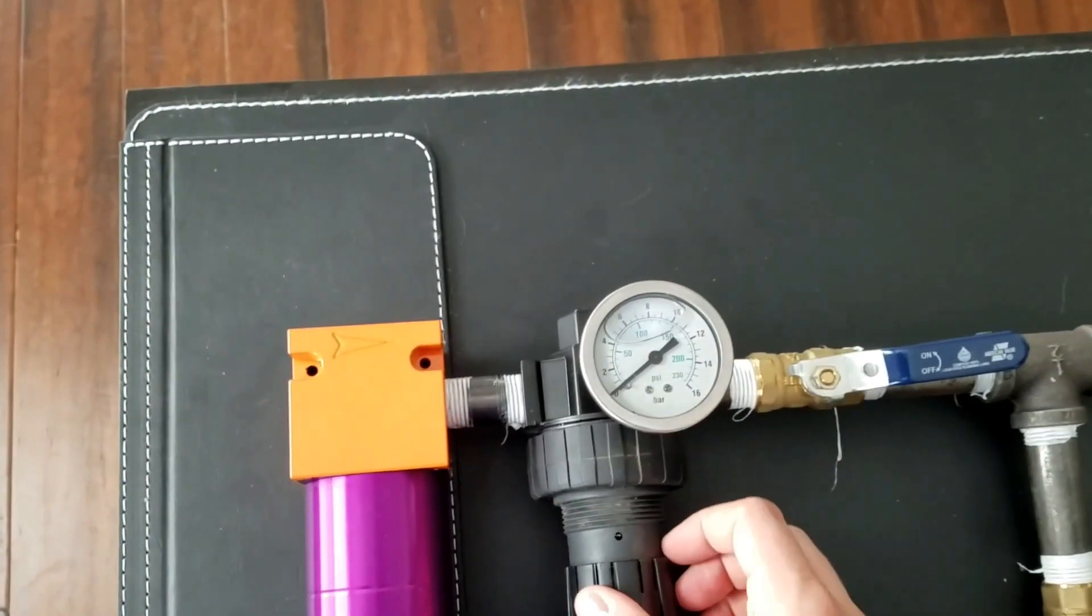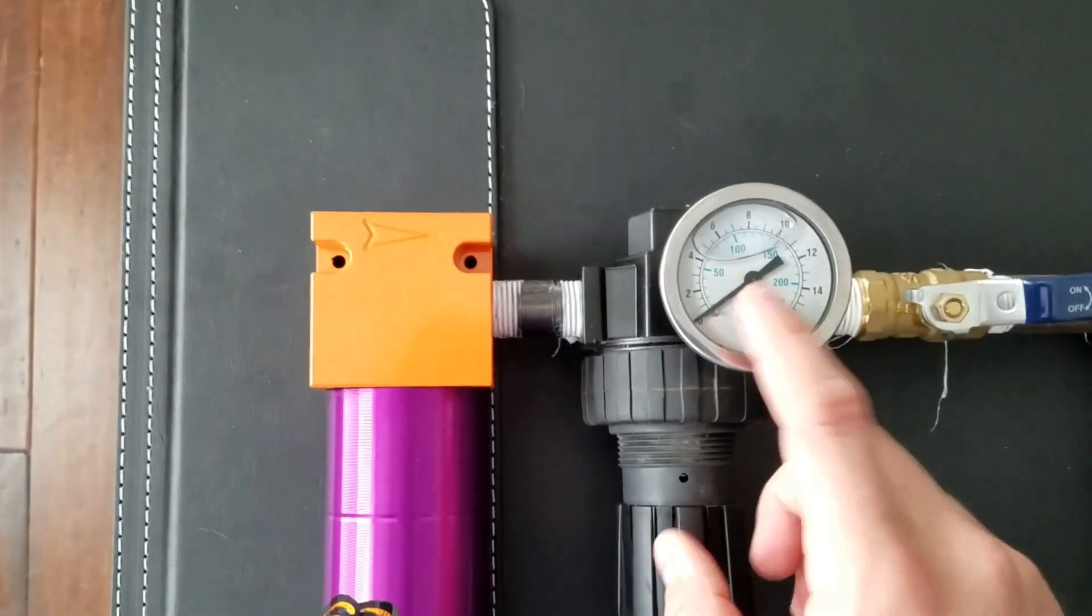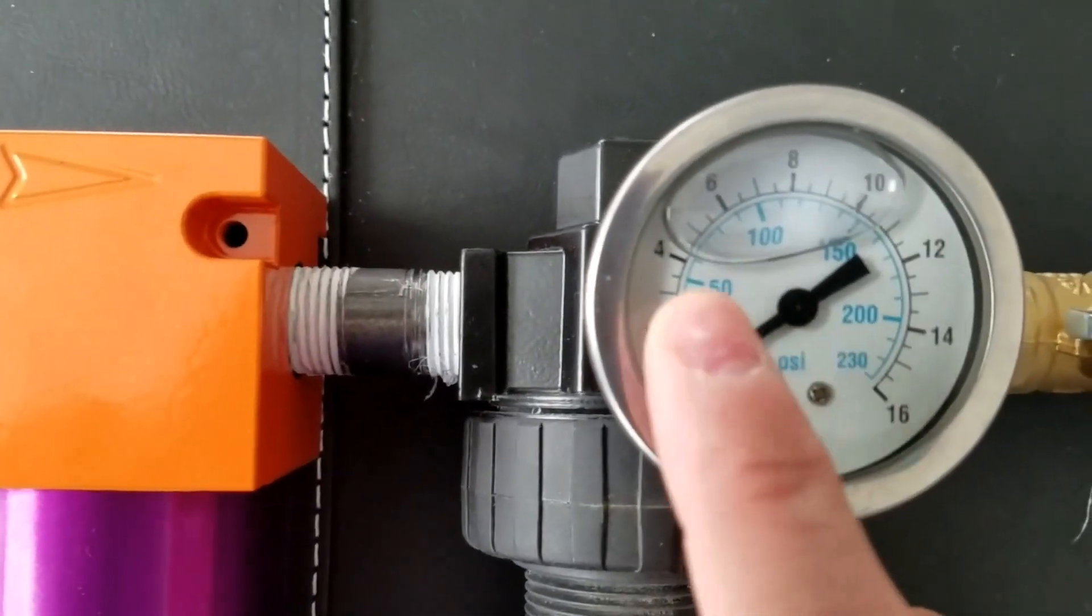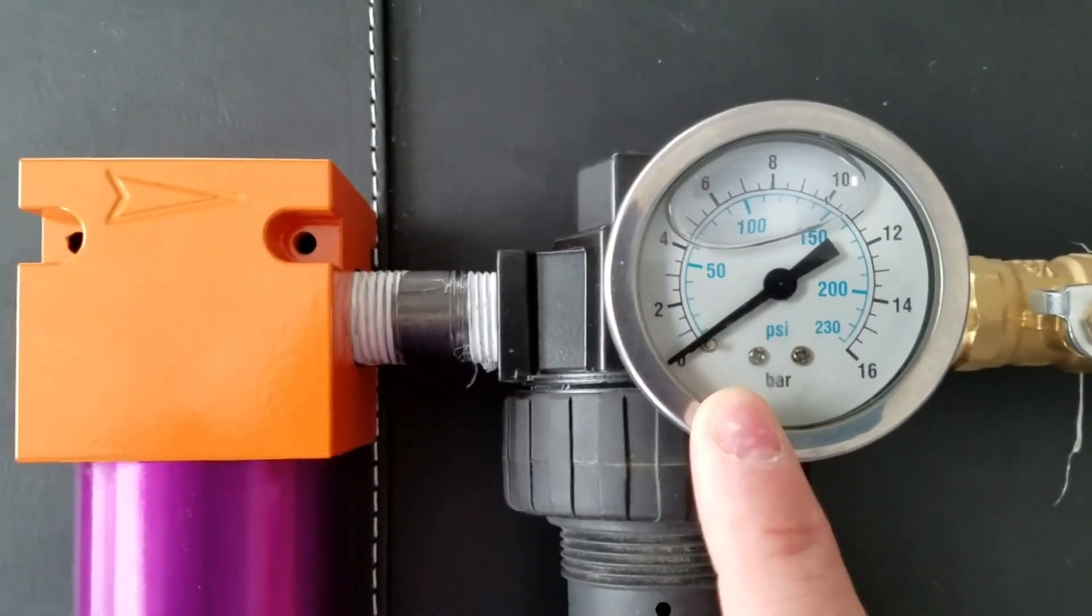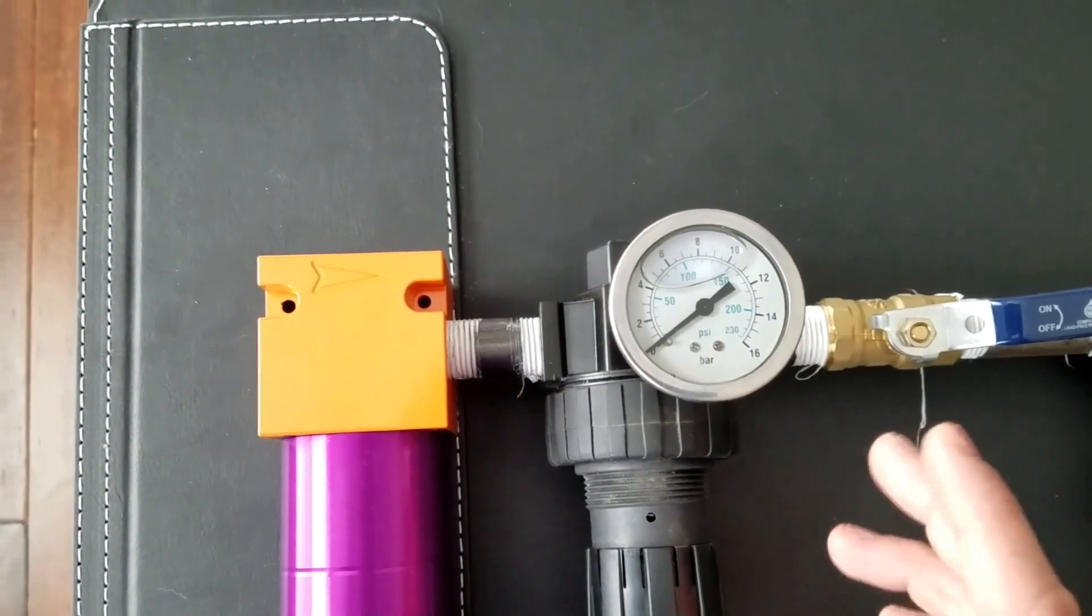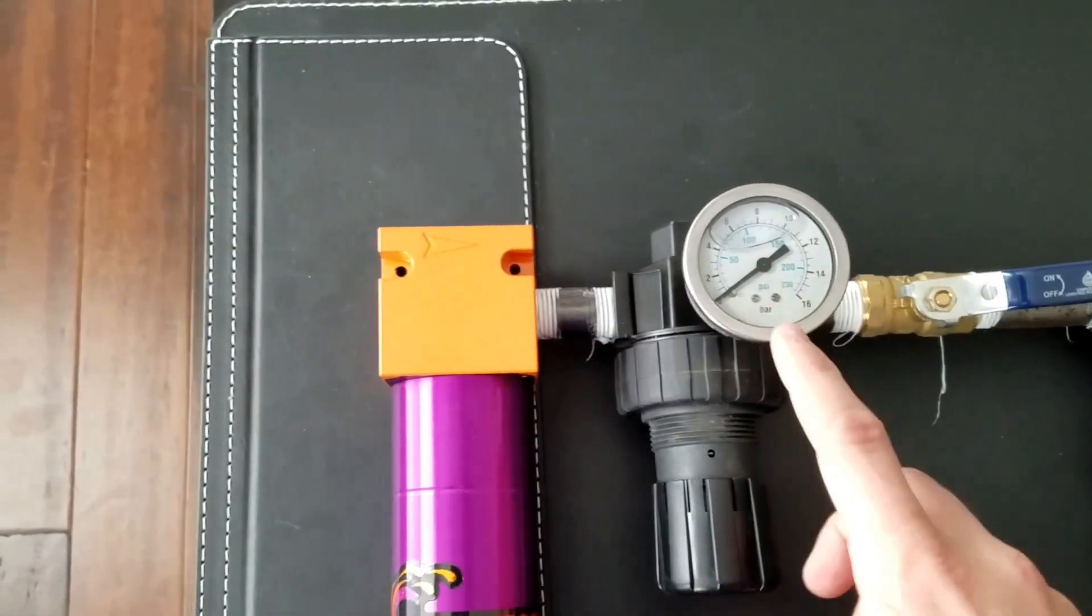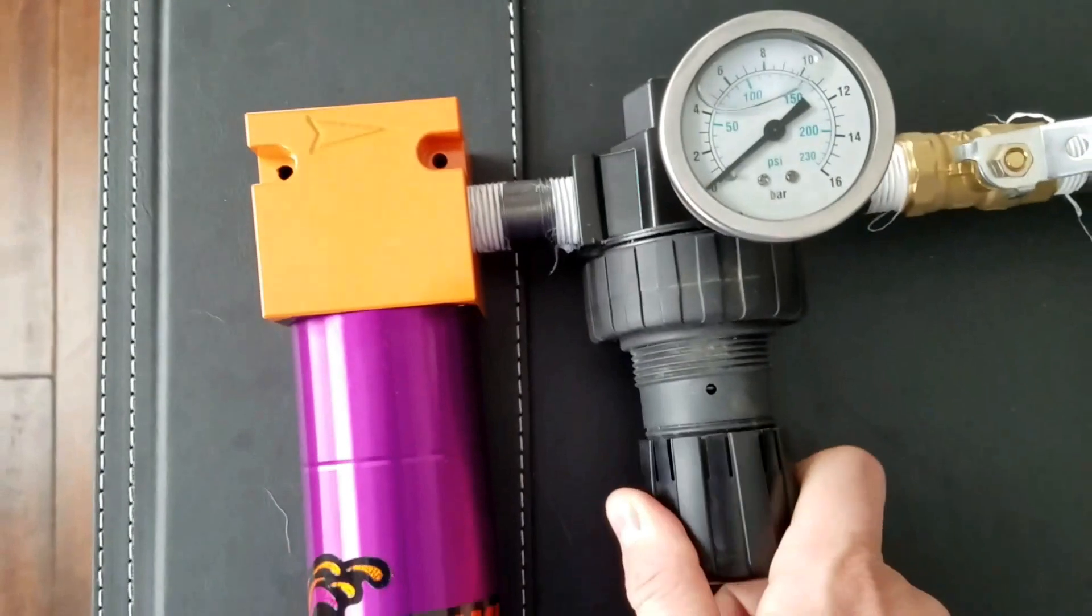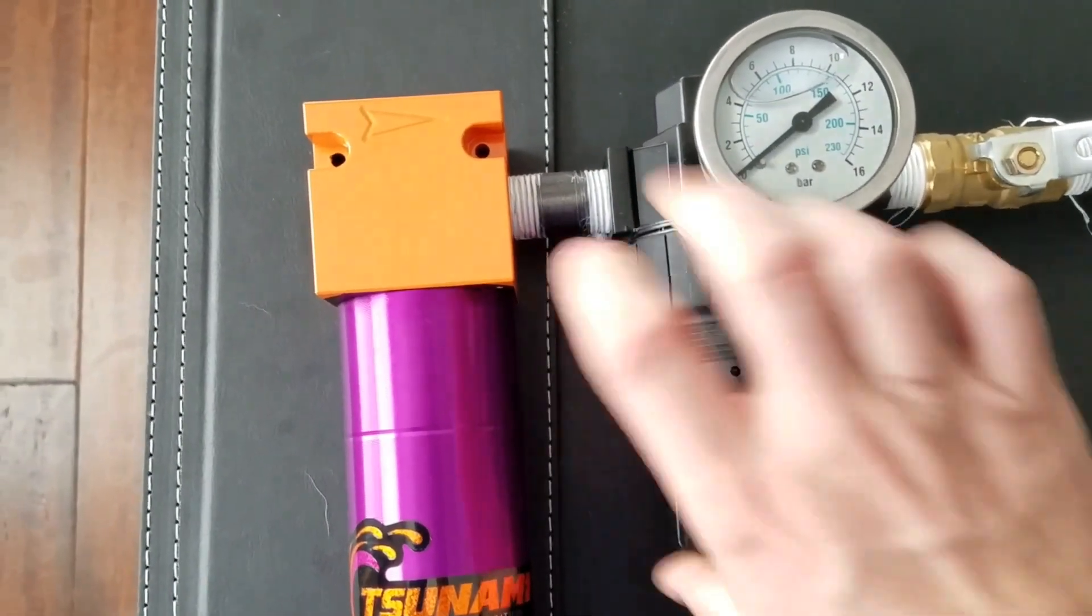So you want to have this first, then your pressure regulator. Then you want to get a good water-filled gauge. You can see the bubble in there. Don't get one of the cheap ones at Harbor Freight. Spend a little bit of money—they're not that much. Get a water-filled gauge.